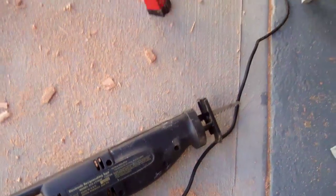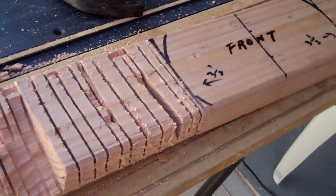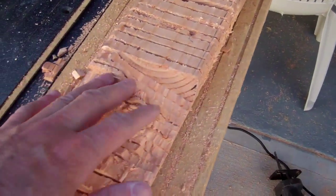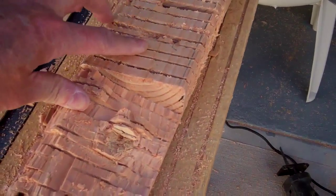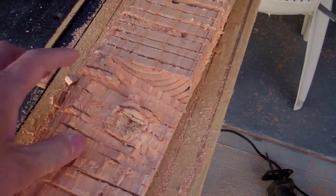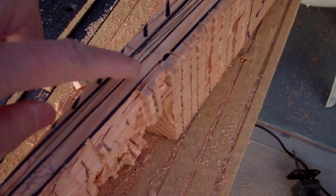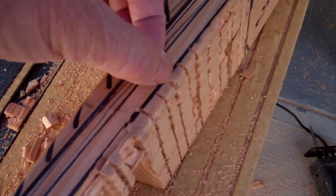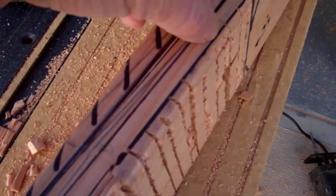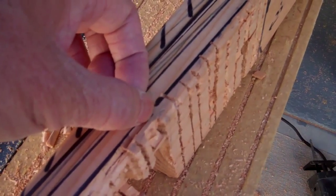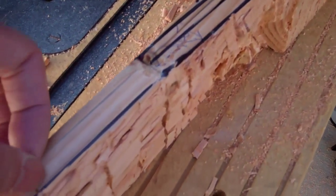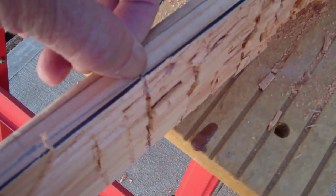Using this reciprocating saw to rough cut this part. This part is the curve and you can see the marks or the cut is very close to the line. I think at one point over here it just nicked the line.